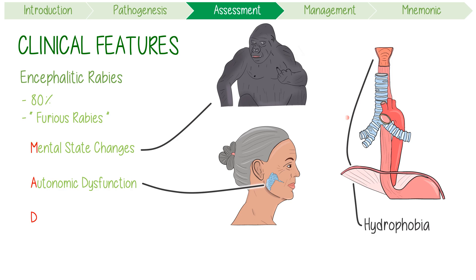We normally inhibit strong reflexes that protect the respiratory tract during choking, but when inhibition is lost due to CNS damage, it results in an exaggerated defence response even when a patient isn't choking. The MAD acronym ends with D for death, once the virus starts causing dysfunction in the brainstem.